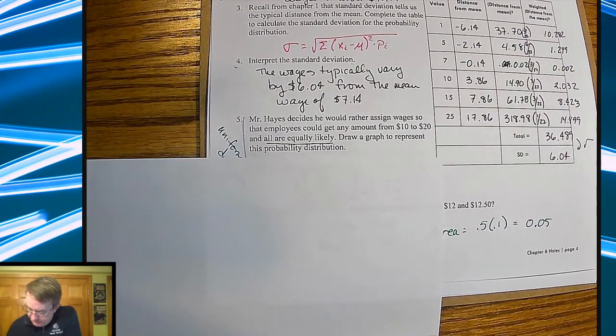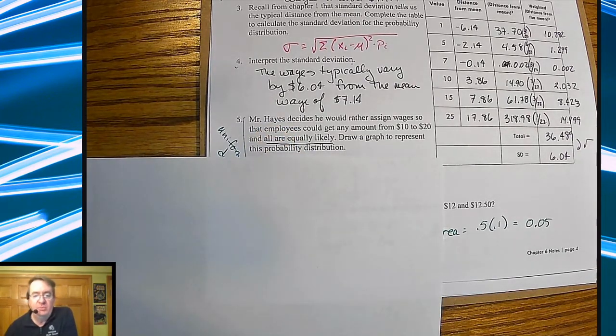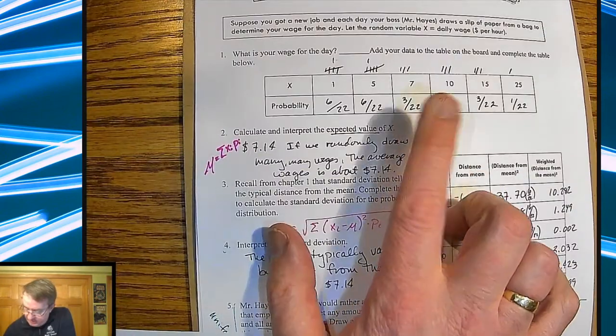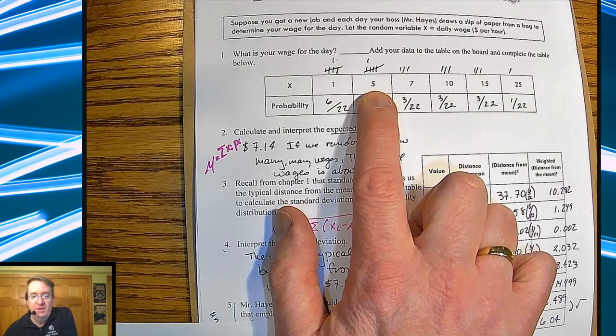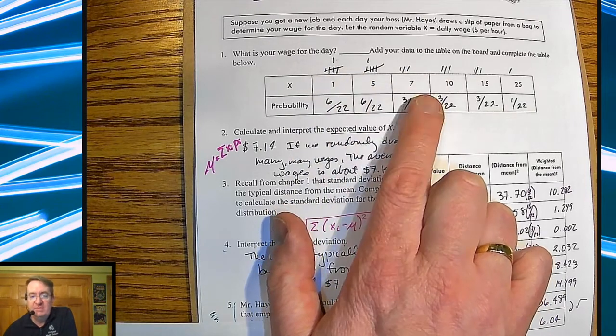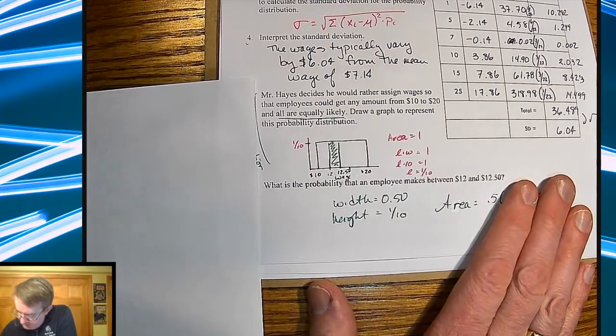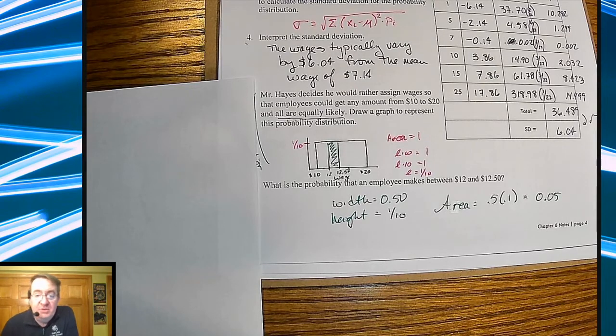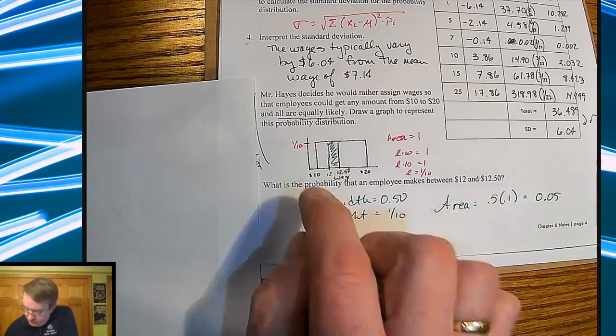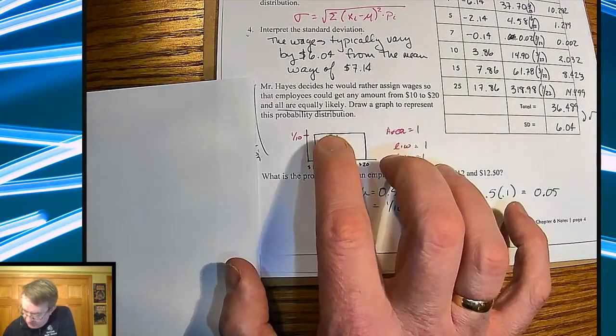Now something a little different. It's called uniform distribution. Mr. Hayes decides that he'd rather assign wages to employees, because remember this is discrete up here by the way, because we have individual amounts and you can't go between one and five. You can get one, you can get five, you can get seven, you can get 10, you can get 15, you can get 25. Down over here, Mr. Hayes decides that he would rather assign wages to employees. He could get any amount between $10 and $20, and all are equally likely. So you had to draw this out. So I drew this rectangle here first.